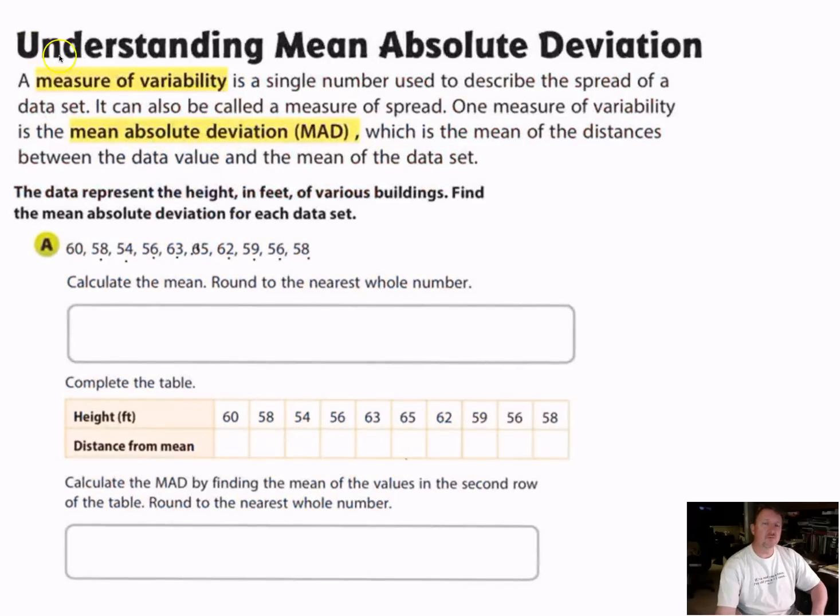So we're trying to understand what mean absolute deviation is. We have a measure of variability, and that's what we're talking about here. It's a single number used to describe the spread of a data set. How far apart is the biggest number in the data and how far apart is the smallest number in the data? That's the spread.